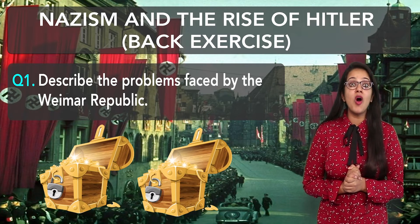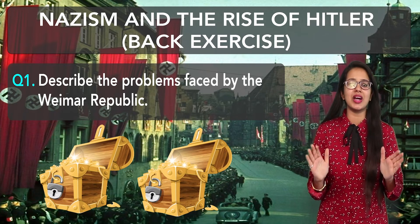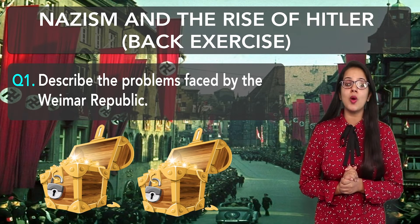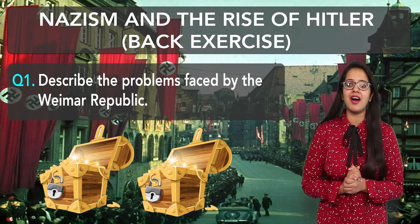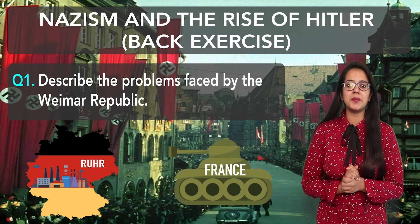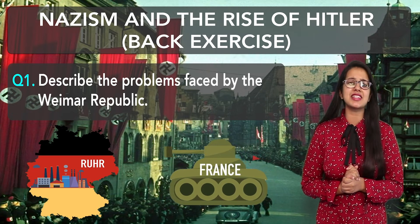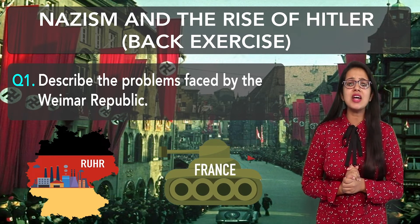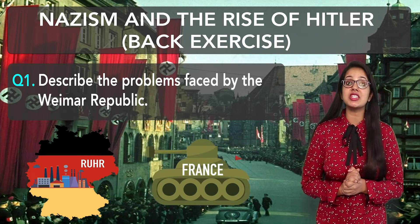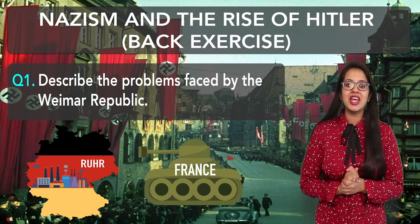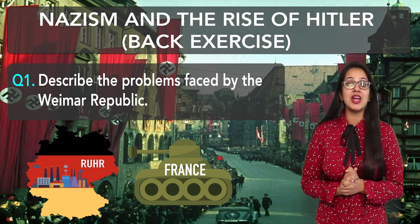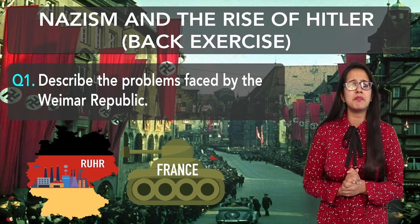Germany's gold reserves were quickly finished. In 1923, Germany had to give war compensation to the Allied powers. As a result, France occupied the Ruhr. In this situation, Germany printed a lot of paper money, leading to high inflation. The German currency, the Mark's value, was reduced. Essential goods prices were increased.